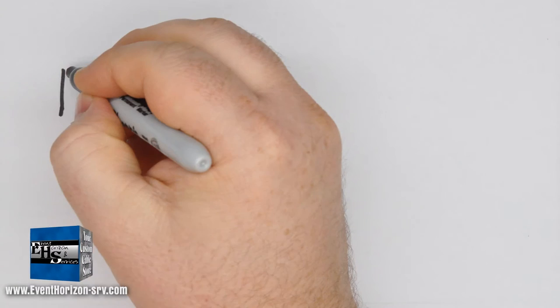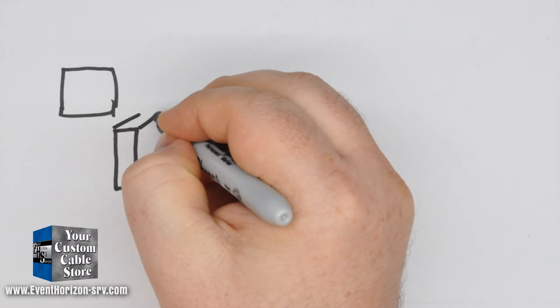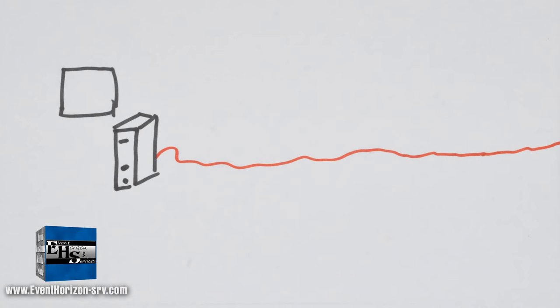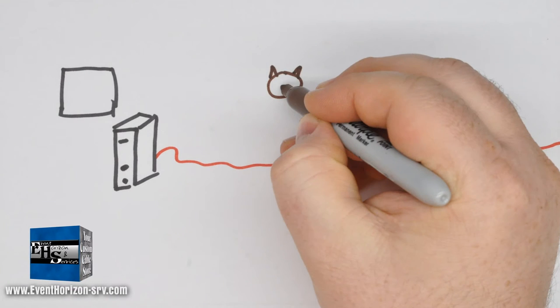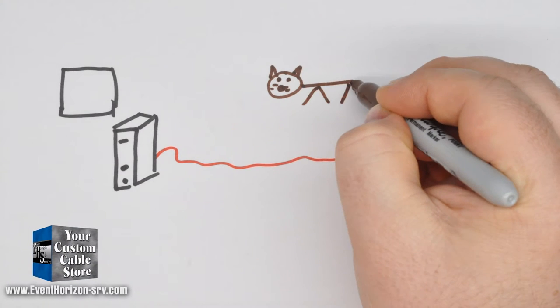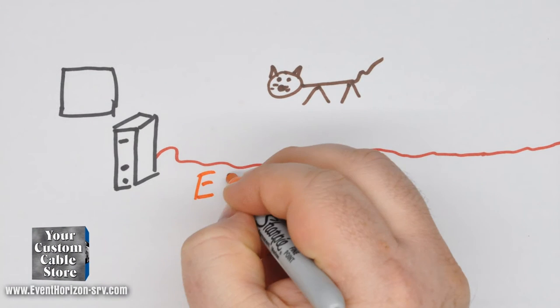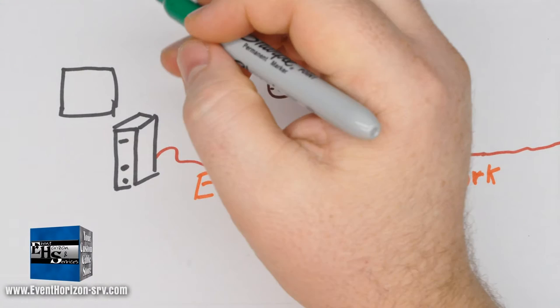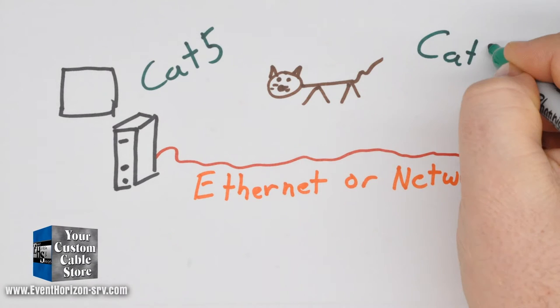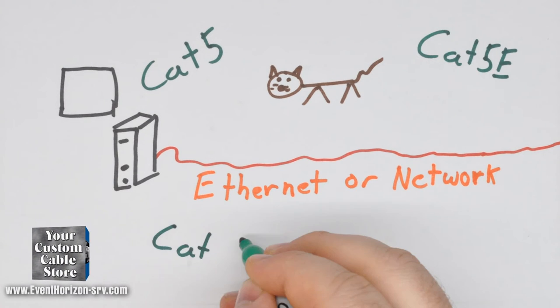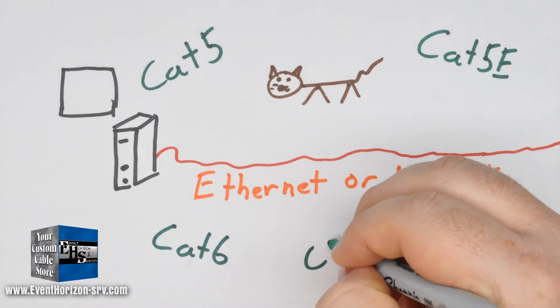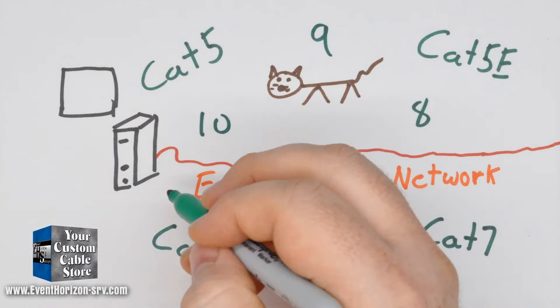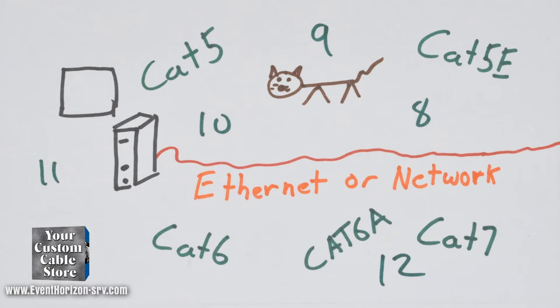And now for CAT cables. I could talk about CAT or category cables for an hour, but I'll keep this really simple. CAT cable is commonly called Ethernet cable or network cable and consists of CAT 5, CAT 5E, CAT 6, CAT 6A, and CAT 7. And more to future-proof this video, let's just say CAT 8, 9, 10, 11, and 12.